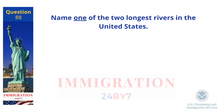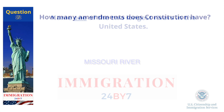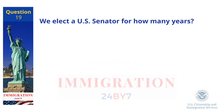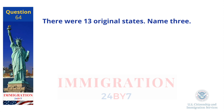Name one of the two longest rivers in the United States. Missouri River. How many amendments does the Constitution have? Twenty-seven. We elect a U.S. Senator for how many years? Six.